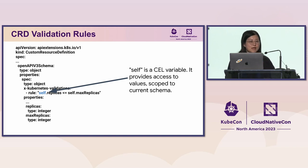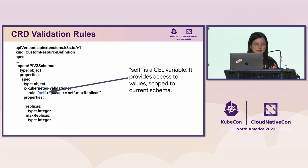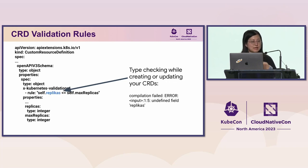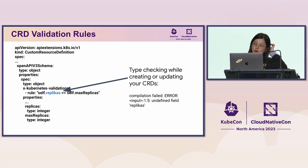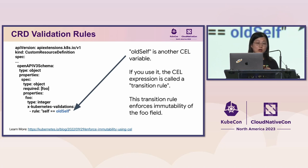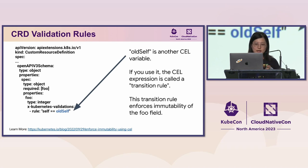In this example, we want to make sure the replica we set is always smaller than the max replica being set. You can use `self`, which is a CEL variable providing access to the values scoped to the current schema. We have really nice type checking that catches errors way ahead of time — if you have a mistyped field, it will be caught while you're creating or updating your CRD. We also have another CEL variable called `old self`, which is used for enforcing immutability — what we call a transition rule. In this example, we enforce that a field called `foo` is immutable through a very simple CEL expression.